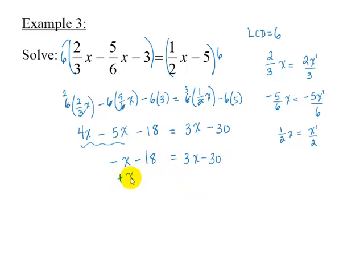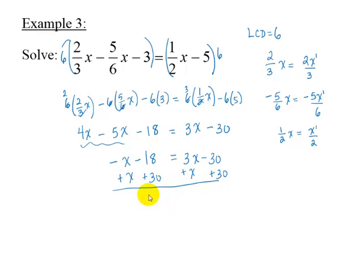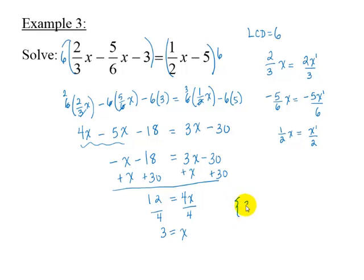Add x to each side and add 30 to each side to get 12 equals 4x. Divide each side by 4 to get 3 equals x. The solution set is 3.